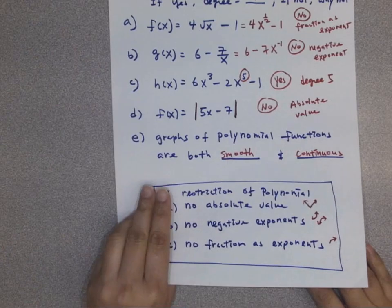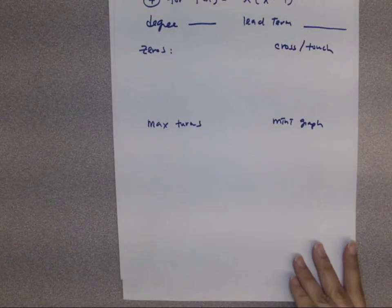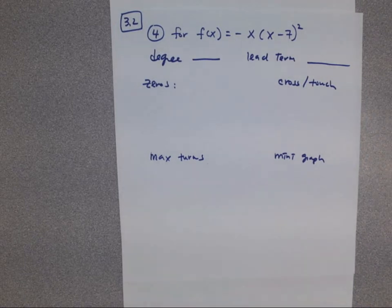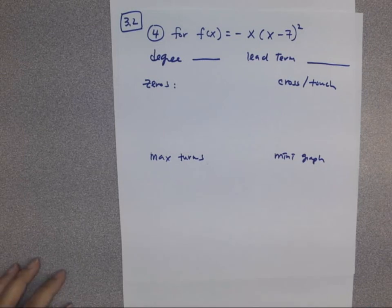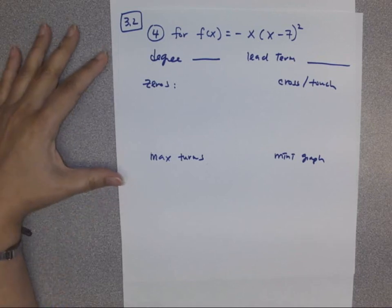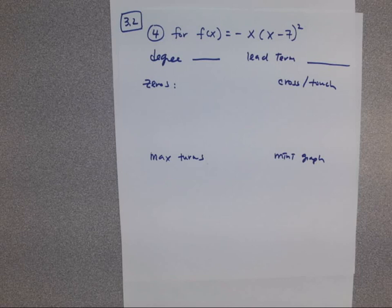We did some quizzes like that. The second question type you may see — pause the video and write down the question if you need it. So it may look like this: for a given function, we want to figure out the degree, the leading term, zeros, whether they're crossing or touching, the maximum turns, and we probably need to sketch a mini graph.